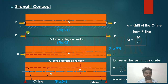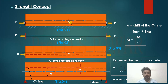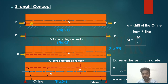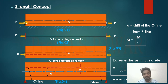Suppose this is a beam which is laid on the ground. A prestress force is going to be applied to this beam through the tendon, and the tendon is placed with eccentricity. When you apply the force to the tendon and cut the tendon, the force acts like this. In the strength concept, the first thing we need to know is the line through which the prestress force is transferred — that line is called the P-line or P force line. The force is transferred through the tendon, so that line is considered the P-line.